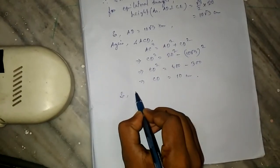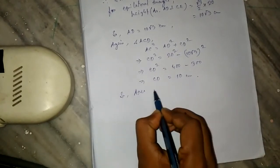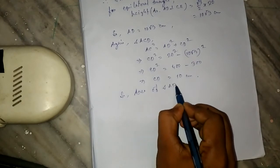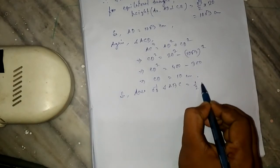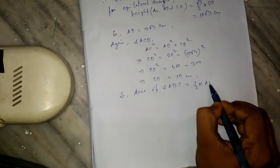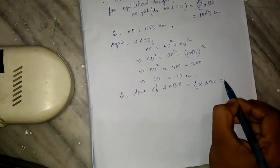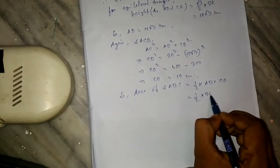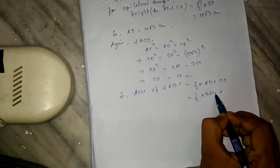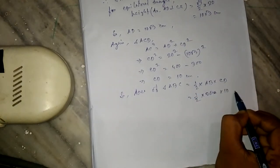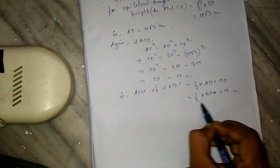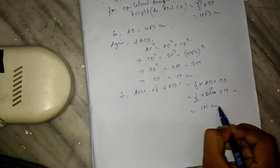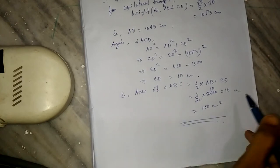Our required result: area of the given triangle equals half into base into height, which is half into AB into CD. AB is 20 centimeters and CD is 10 centimeters, so the area equals 100 centimeters squared. Thank you.